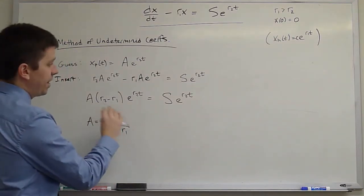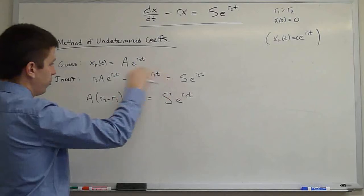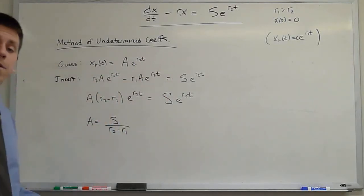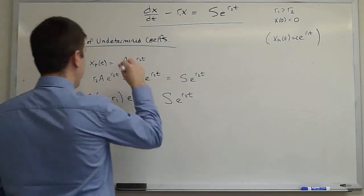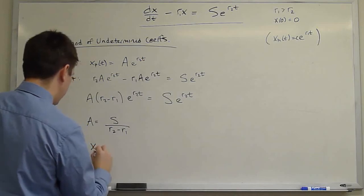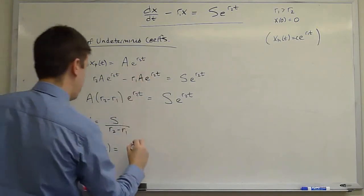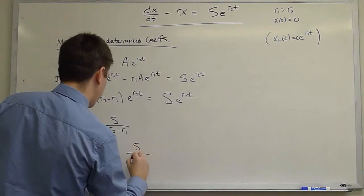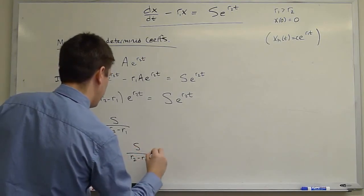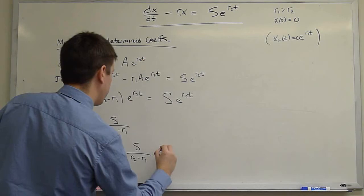And since we have found an A that allows this ordinary differential equation to be satisfied, we have therefore found a solution. We have found a particular solution of the form S over R2 minus R1 e to the R2t.